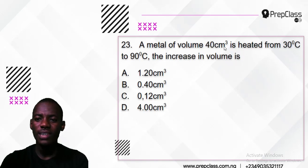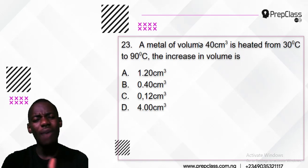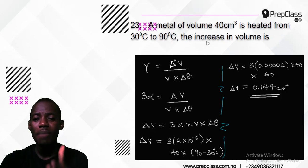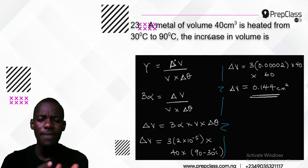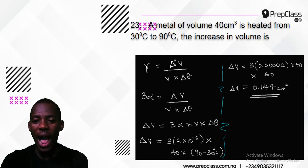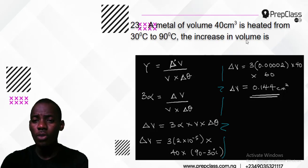Number 23 says a metal of volume 400 centimeters cubed is heated from 30 degrees Celsius to 90 degrees Celsius. The increase in volume is what? This is a question on volume expansivity. The formula is: volume expansivity (Y) equals change in volume over volume times change in temperature. Now I wasn't given the volume expansivity, but the linear expansivity of the metal. Volume expansivity equals three times the linear expansivity. So I will make change in volume the subject of the formula.